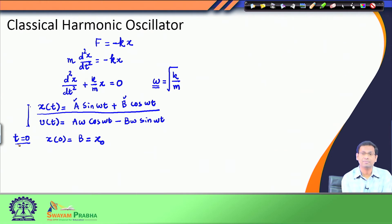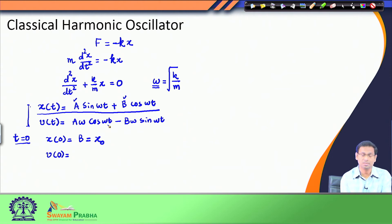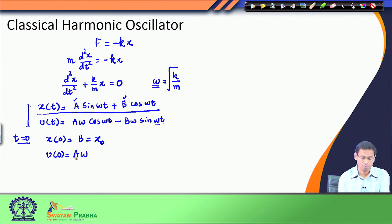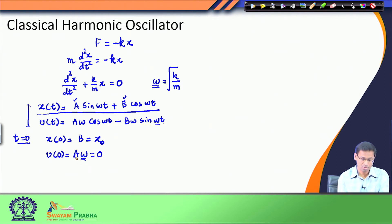Now I apply the same t equals 0 condition for the speed. The speed v at t equals 0: putting t equals 0 in the velocity equation gives cos(0) which is 1, so I have a·omega, and the sin(0) term gives 0. Therefore v(0) equals a·omega. But I know that at the beginning the spring was at rest, so the initial speed was 0. Therefore a·omega equals 0, and since omega is related to the spring constant and mass and is not zero, I have a equals 0. So I now know the value of both a and b.